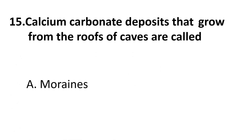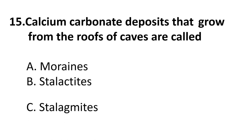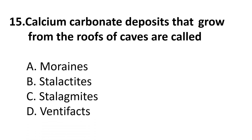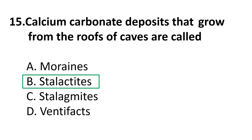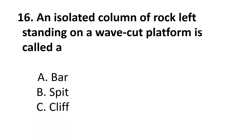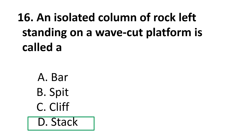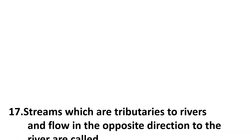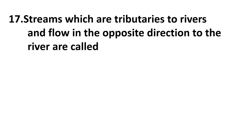Coming to the fifteenth question: calcium carbonate deposits that grow from the roofs of caves are called — A) moraines, B) stalactites, C) stalagmites, D) ventifacts. The correct answer is B: stalactites. Coming to the sixteenth question: an isolated column of rock left standing on a wave platform is called — A) bar, B) spit, C) cliff, D) stack. The correct answer is D: stack.